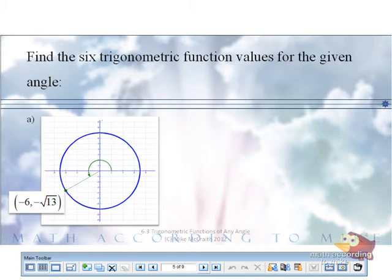So of our six trig functions, which one should be positive? Tangent and cotangent, and everything else should be negative.